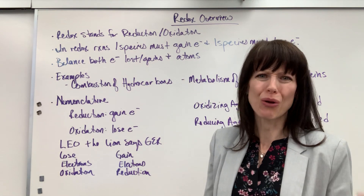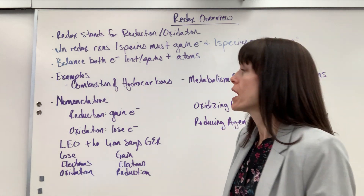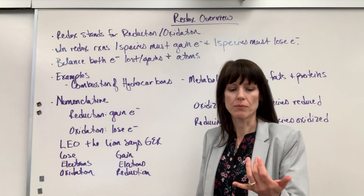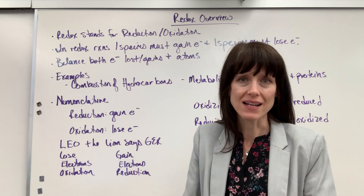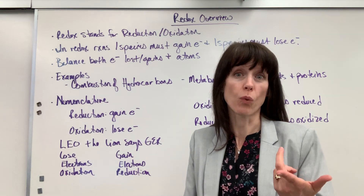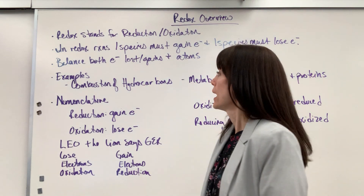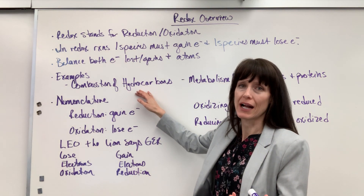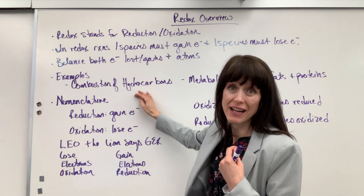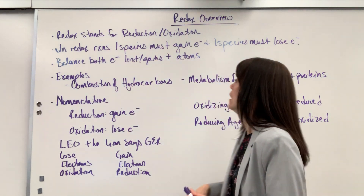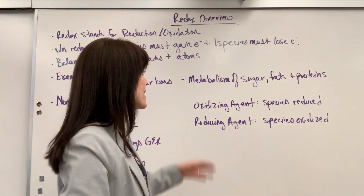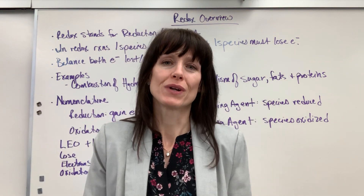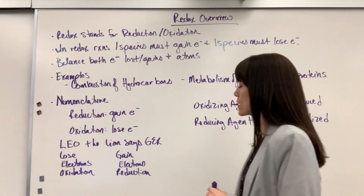We have redox reactions all over in our life. Powerful examples include the combustion of hydrocarbons — all of our energy comes from combusting coal, gas, gasoline in our cars, and natural gas to run your washing machine, dishwasher, or dryer. Anytime you're burning a hydrocarbon, it's also a redox reaction — electrons are moving. Another huge one, really important for you and me, is the metabolism of sugar, fats, and proteins — also redox reactions where not only do atoms rearrange, but electrons move and transfer.